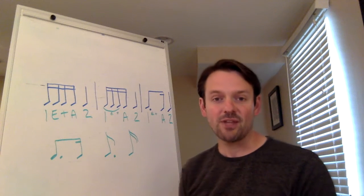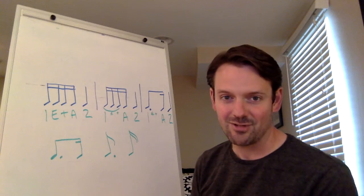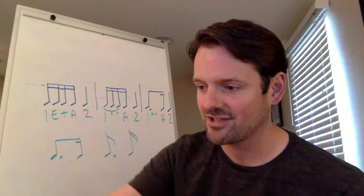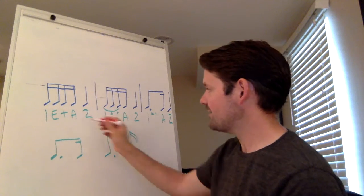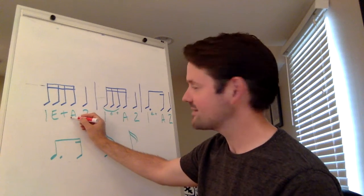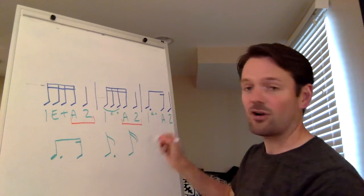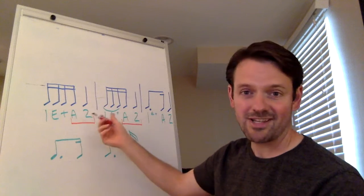Now, when you play dotted eighth sixteenth notes, you have to make sure that you're putting the uh and the two right next to each other. So, you've got to make sure, and maybe I could have written them closer together. The uh and the two are just as close together as the one and the e.